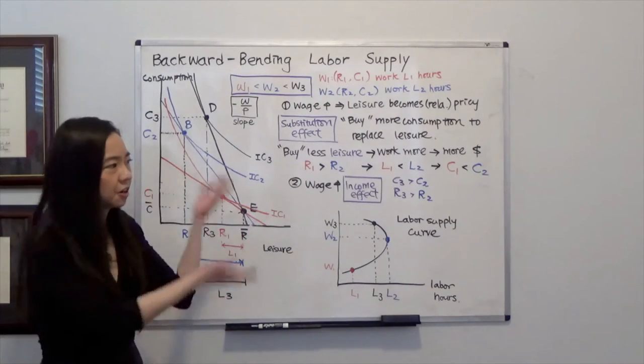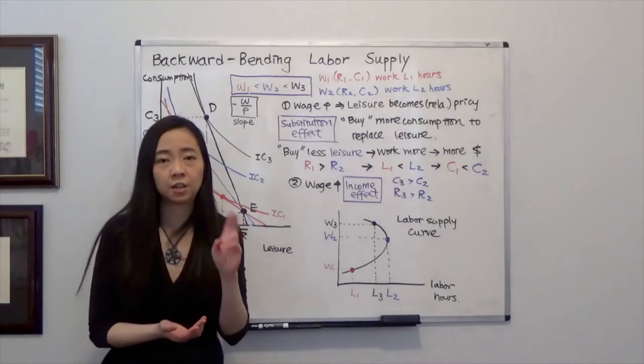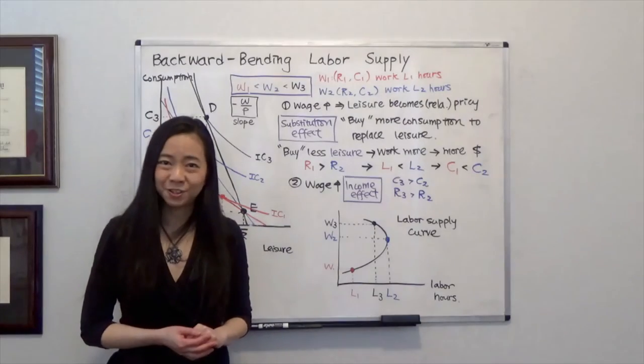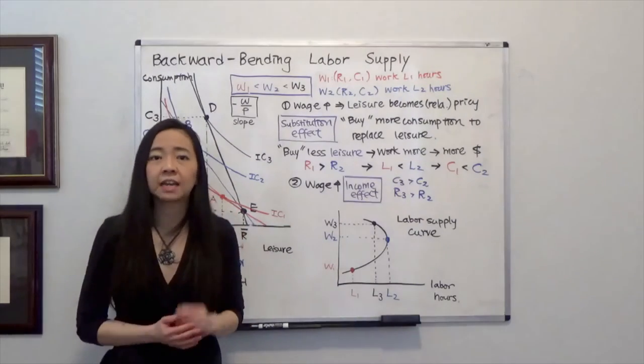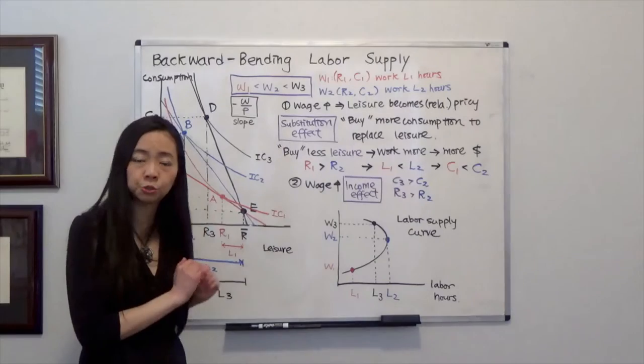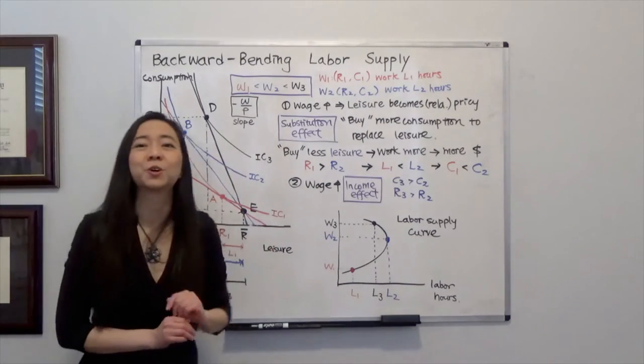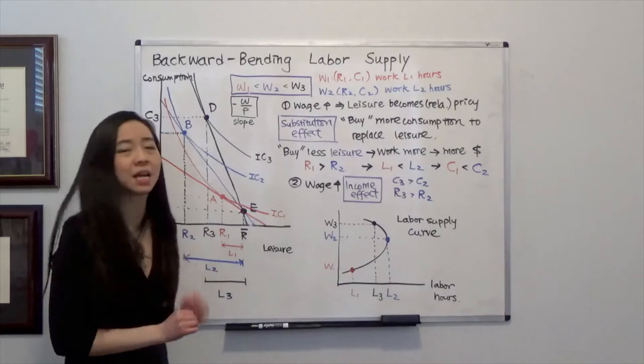Now, in the earlier chapters, you learn that if you have two goods, good one and good two, if good one becomes more expensive, then substitution effect is going to tell you to buy more good two to replace good one. Likewise, when your wage rate goes up, that means leisure becomes more expensive.